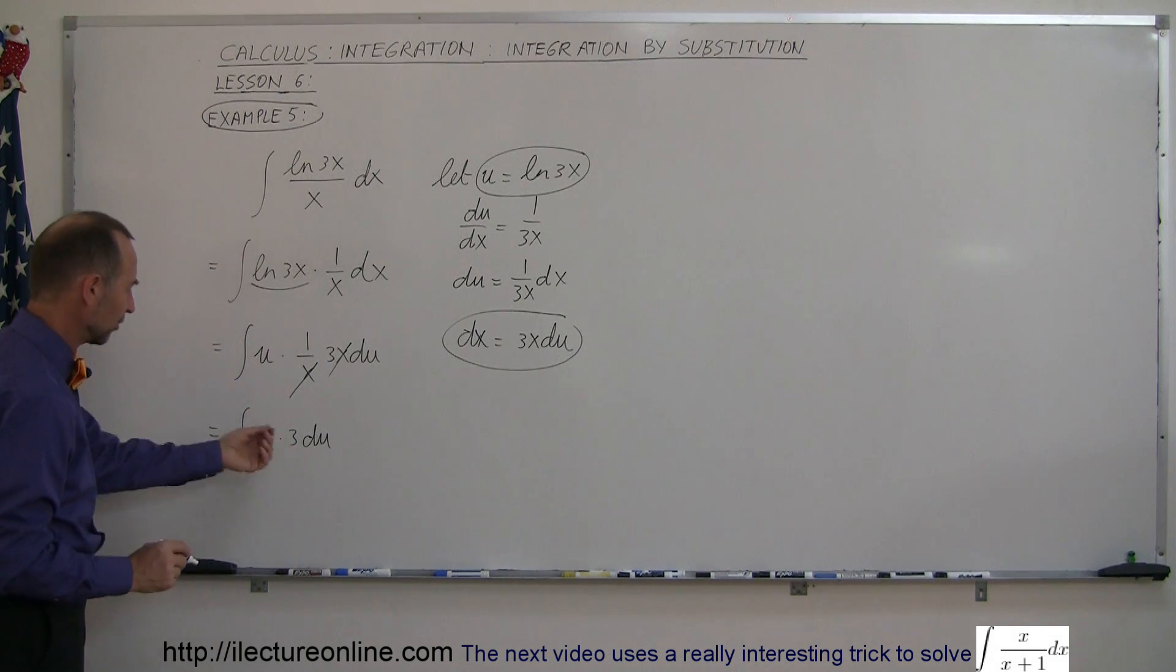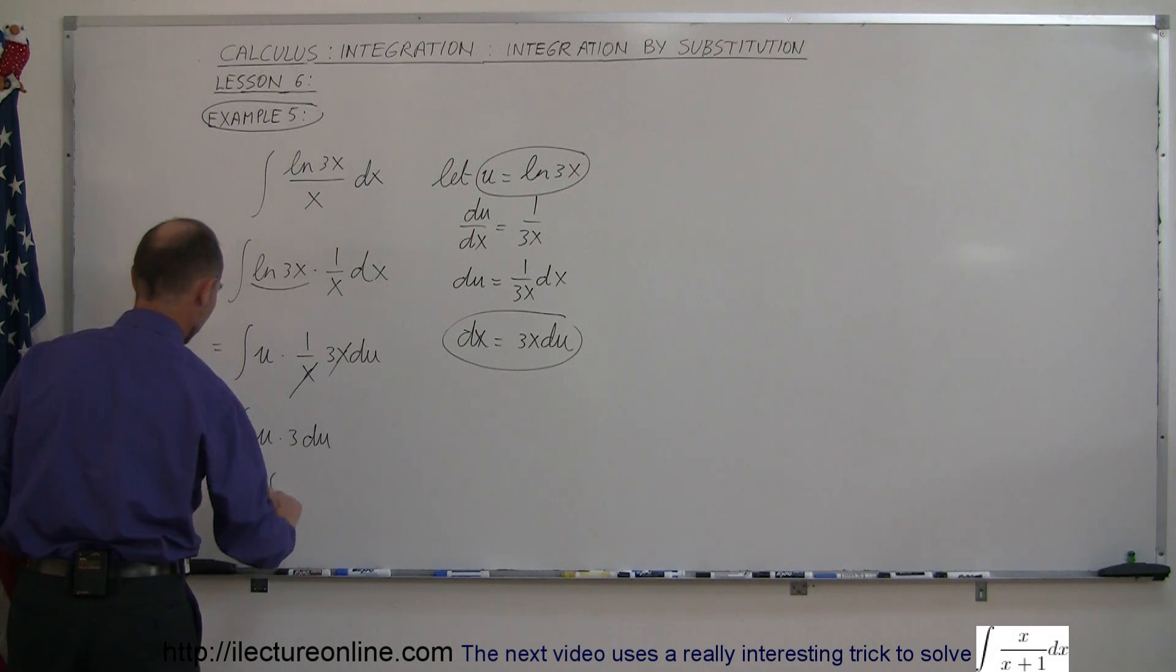And then you want to take the 3, which is a constant, outside the integral sign. So this is equal to 3 times the integral of u du.